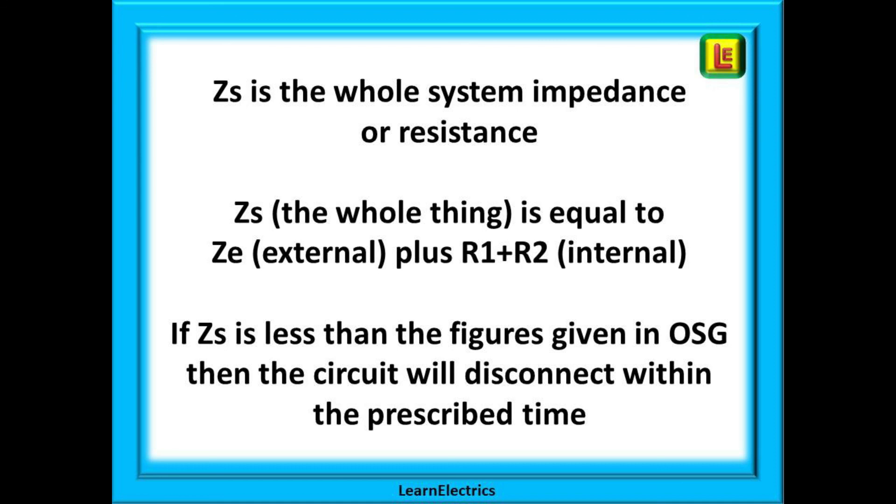If ZS is less than the figures given in the onsite guide, and there are entries for every type of MCB, then a big enough fault current will flow to cause the fuse or MCB to operate within the prescribed time for safety.